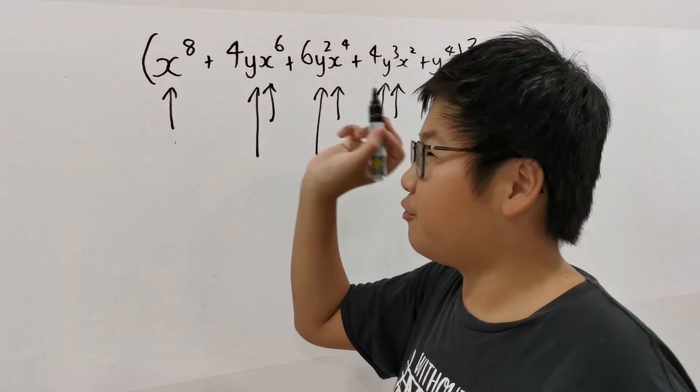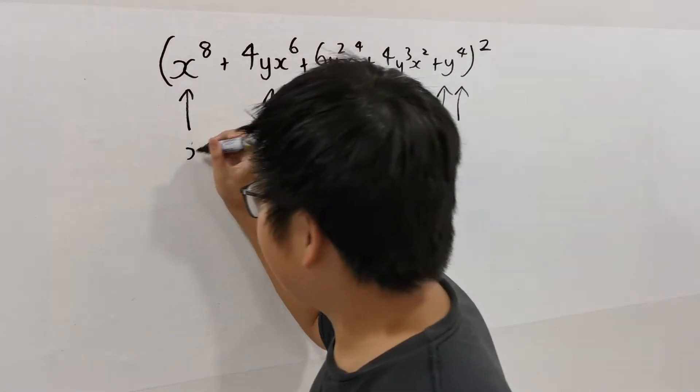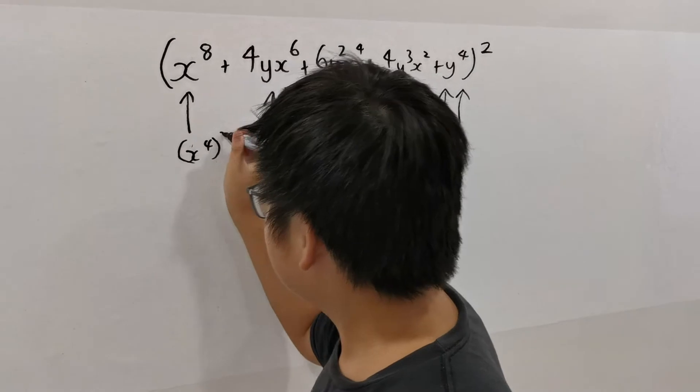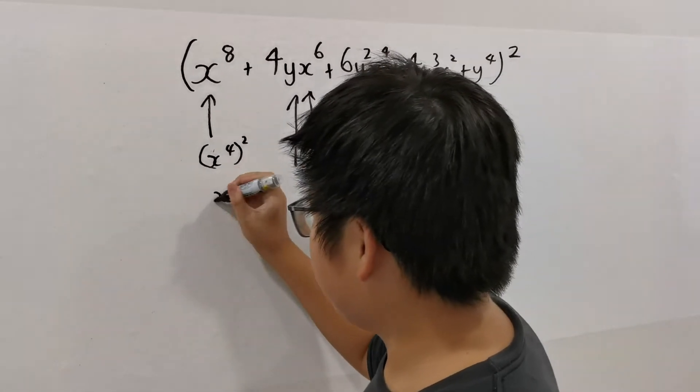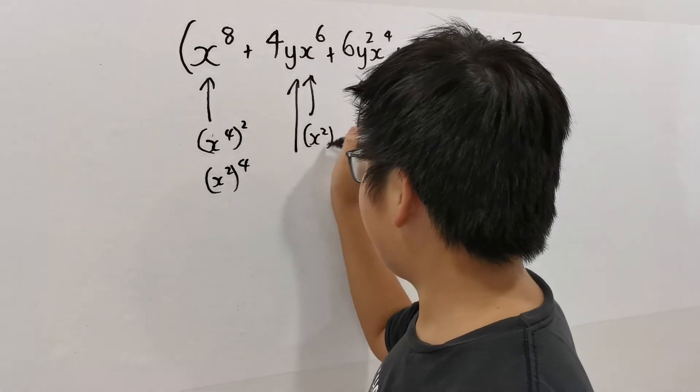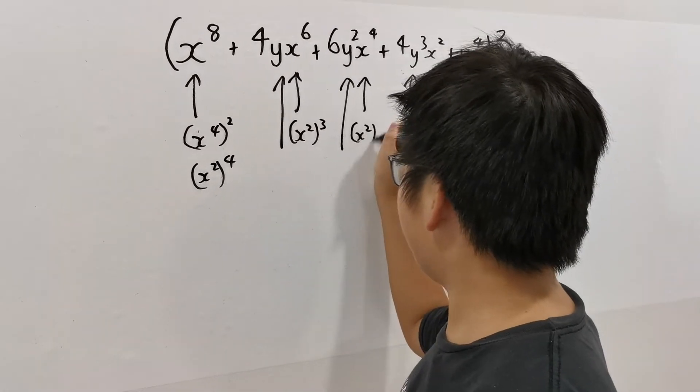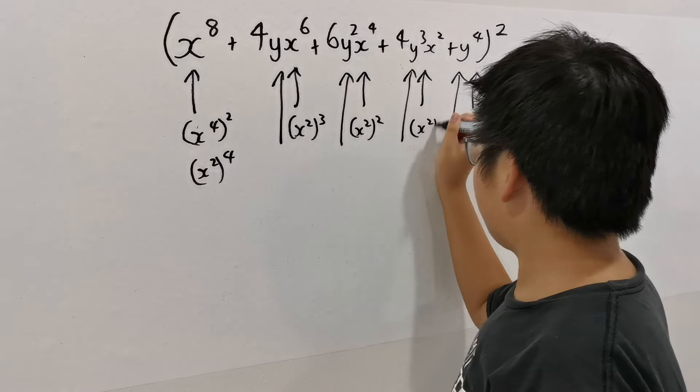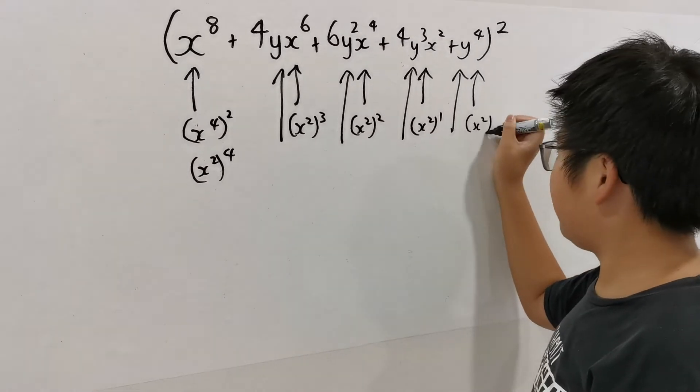x8 is x4 squared. So you can write that down. Or it can be x squared to the 4, x squared cubed, x squared squared, x squared to the 1, x squared to the 0.